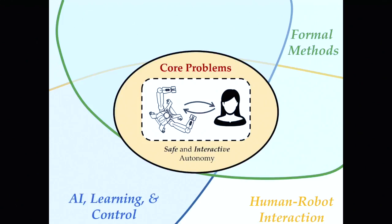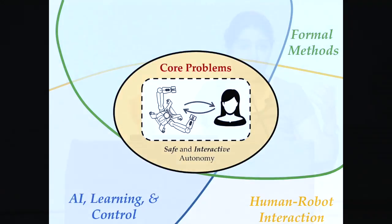The core problems we think about are safe and interactive autonomy. These problems lie at the intersection of a few different fields. We want to do machine learning — we have a lot of data and we want to learn models. We also need to control the system. But in addition to that, we have humans interacting with these systems, so we need to think about human-robot interaction and how to model humans — what computational models should we use for these interactions.